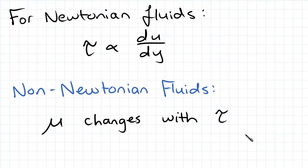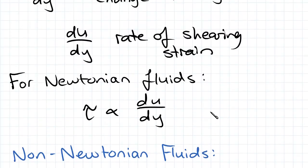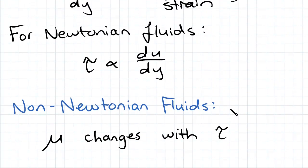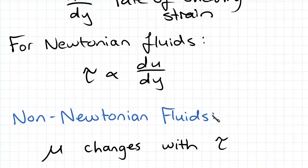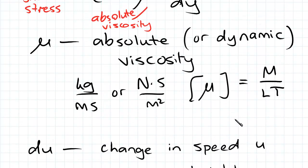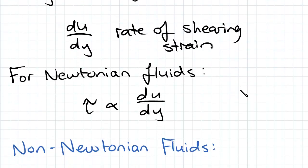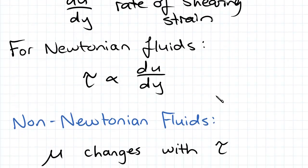So for Newtonian fluids, shear stress is directly proportional to the rate of shearing strain du on dy. And that means that mu is constant. So absolute viscosity is a constant in Newtonian fluids. You'll be dealing only with Newtonian fluids in this subject. So mu will always be a constant.